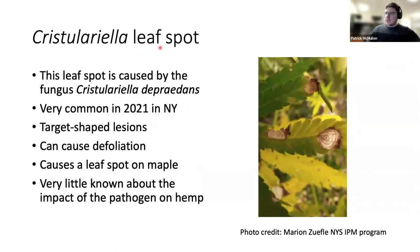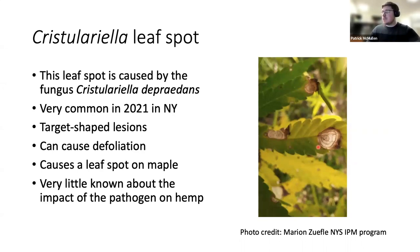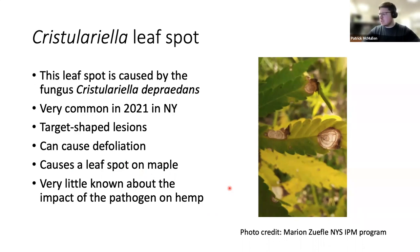Another leaf spot, Pestalotiopsis, is very common under certain climate conditions. We saw a lot of this in 2021 here in New York. It forms very distinct target-shaped lesions with concentric circles, making it pretty easy to distinguish from the others. Like other leaf spots, it can cause defoliation when it progresses far enough. This does have other hosts including maple trees, so you might see this if growing close to a wooded area. Very little is known about its impact on hemp yield.